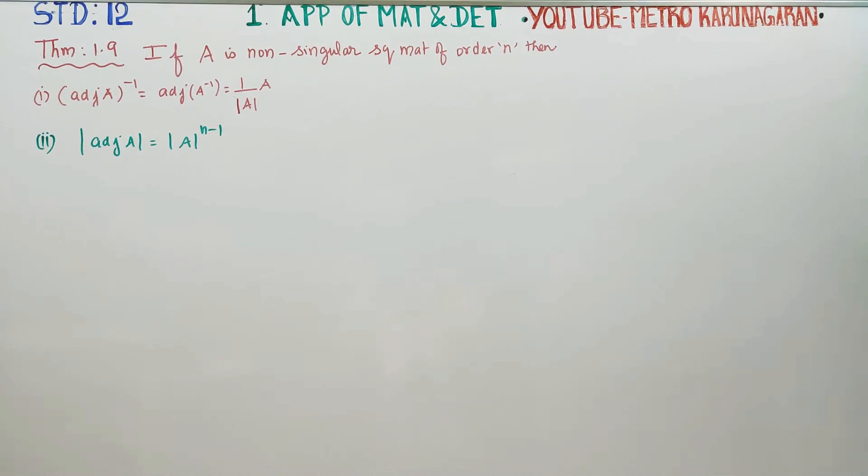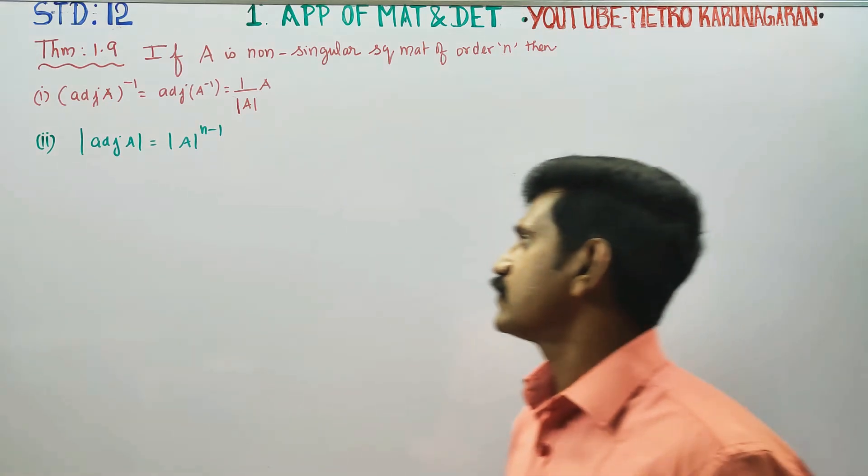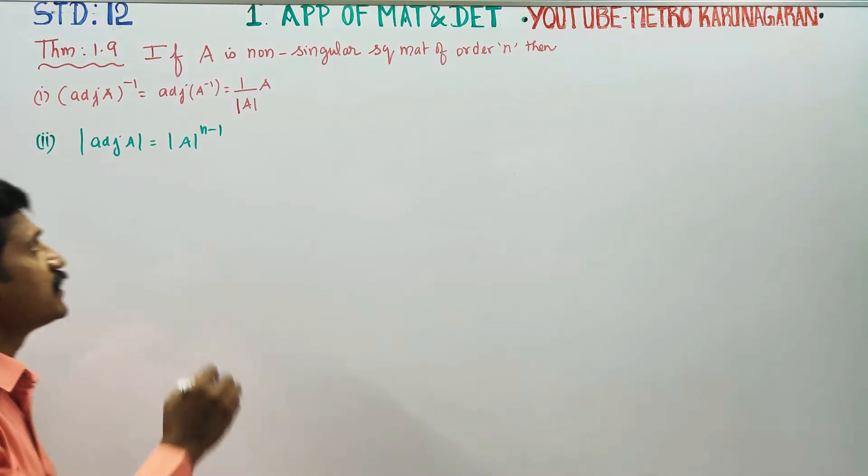Dear students, in theorem 1.9, second subdivision, we are going to prove that determinant of adjoint A is equal to determinant of A to the power n minus 1.